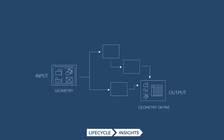In the MBD one, the output is PMI — it's automating the creation of PMI in your model. In the lattice example, it is filling a volume with a lattice structure.